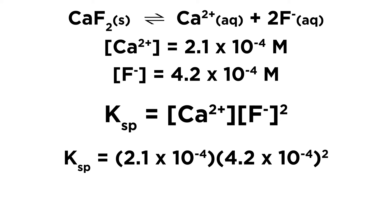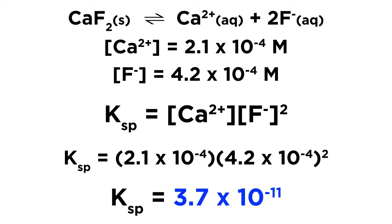Now we have all the information we need — we have the calcium ion concentration and we have the fluoride ion concentration, so we just plug those numbers in and do the arithmetic. We get a Ksp value of 3.7 times 10 to the negative 11.